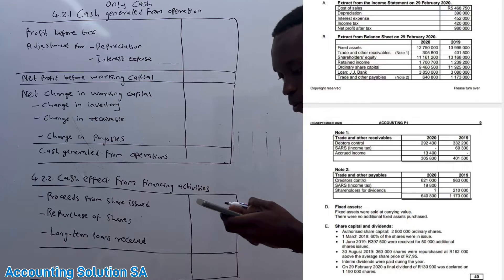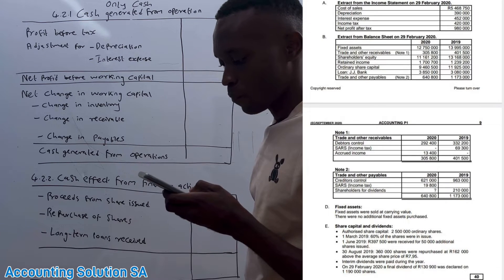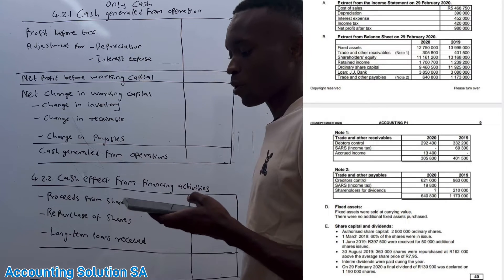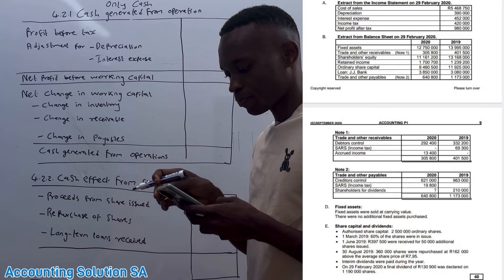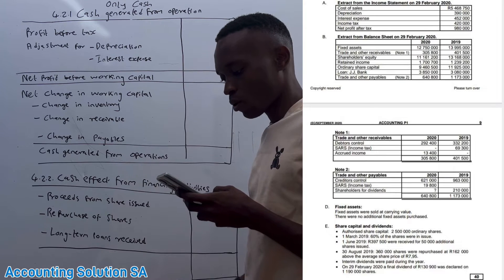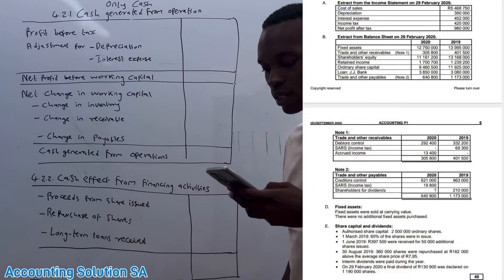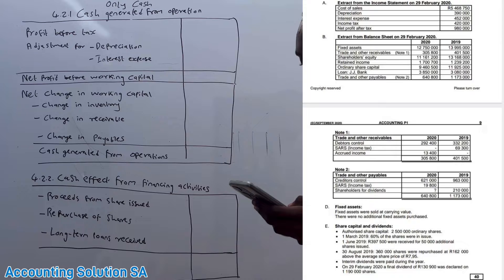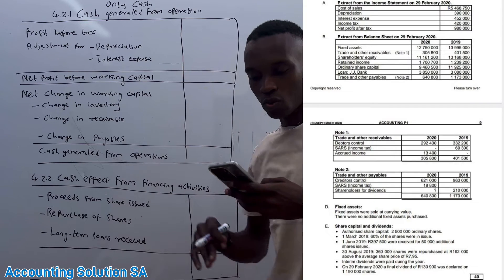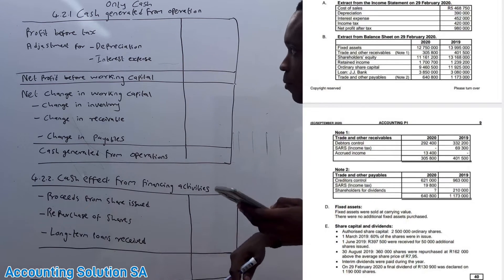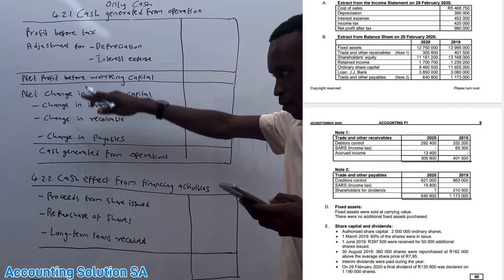Let's start with the question paper. Question 4.2.1 says to prepare or complete the notes for cash generated from operations. This is the format that you need to know.